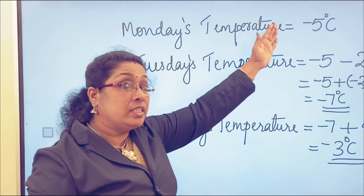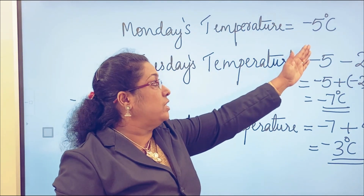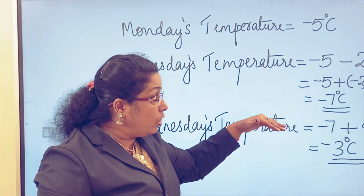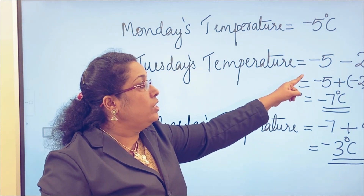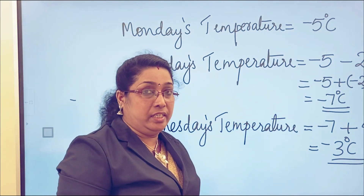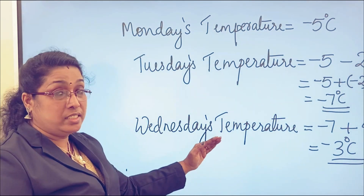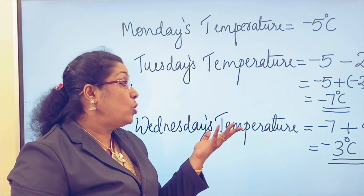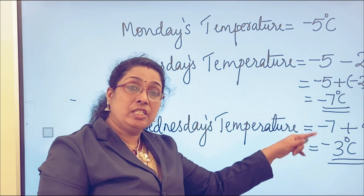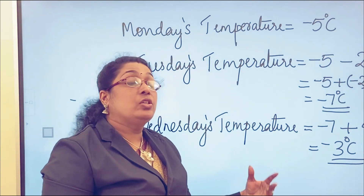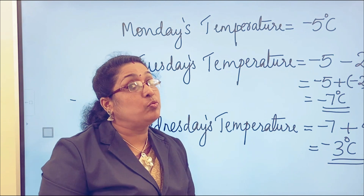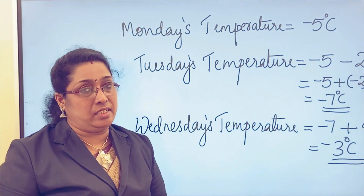Monday's temperature was negative 5 degrees Celsius. Tuesday it came down: negative 5 minus 2 is negative 7 degrees Celsius. And Wednesday it rose again by 4 degrees Celsius, so negative 7 plus 4 gives the temperature on Wednesday as negative 3 degrees Celsius.